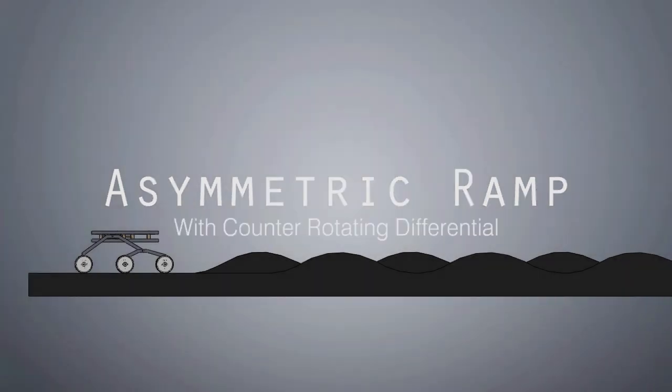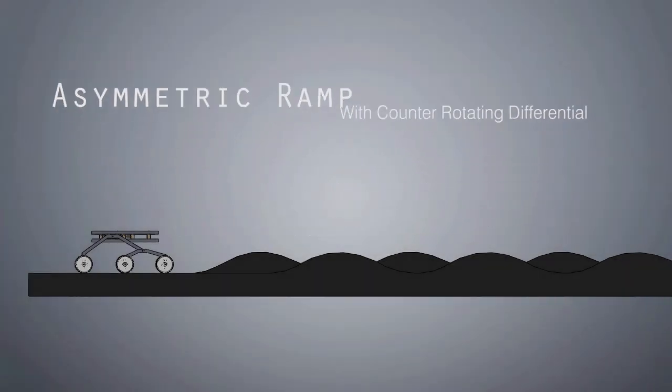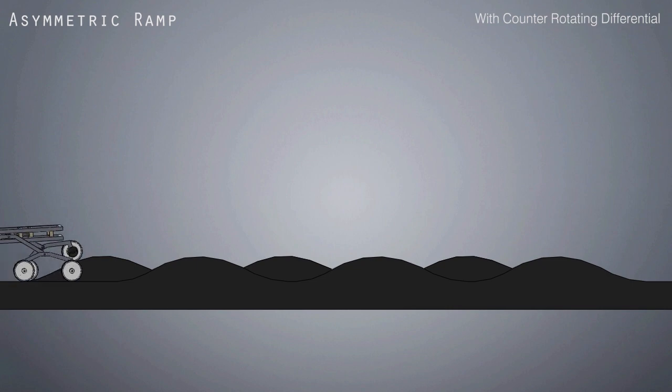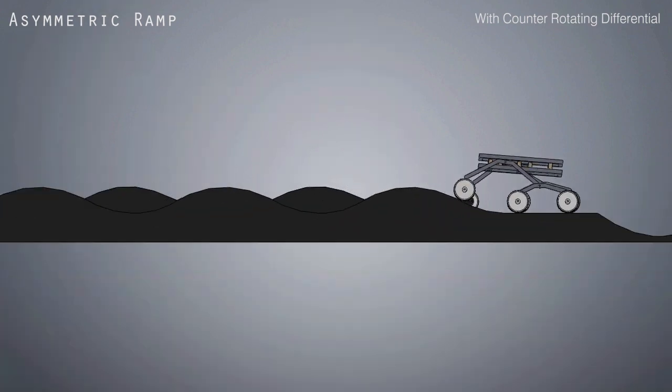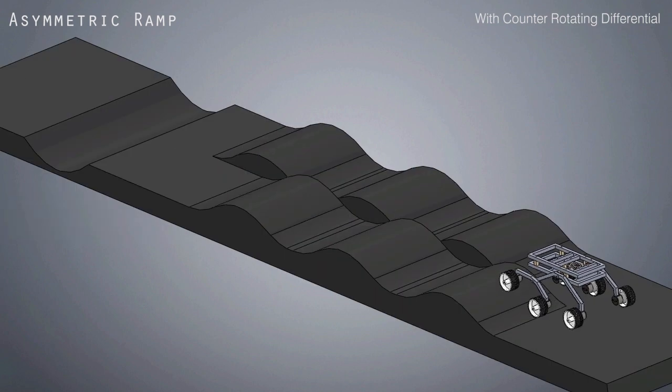Now let's observe how the rover would perform on the same ramp, but this time with the differential. Yeah, this time the movement seemed to be buttery smooth. There is some wobbling on the deck, but it's comparatively much less. Plus, the best thing is that it manages to keep all six wheels in contact with the ground at